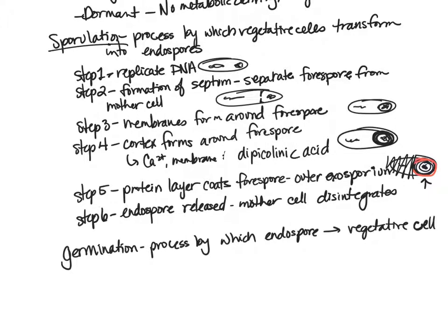Note that sporulation and endospores are different from spores like the seeds that come from ferns. Plant spores are reproductive structures spread to make more copies. Endospores are not seeds — they are survival structures that can withstand an unfavorable environment, wait until conditions improve, and then germinate back into a vegetative cell that can metabolize and reproduce.